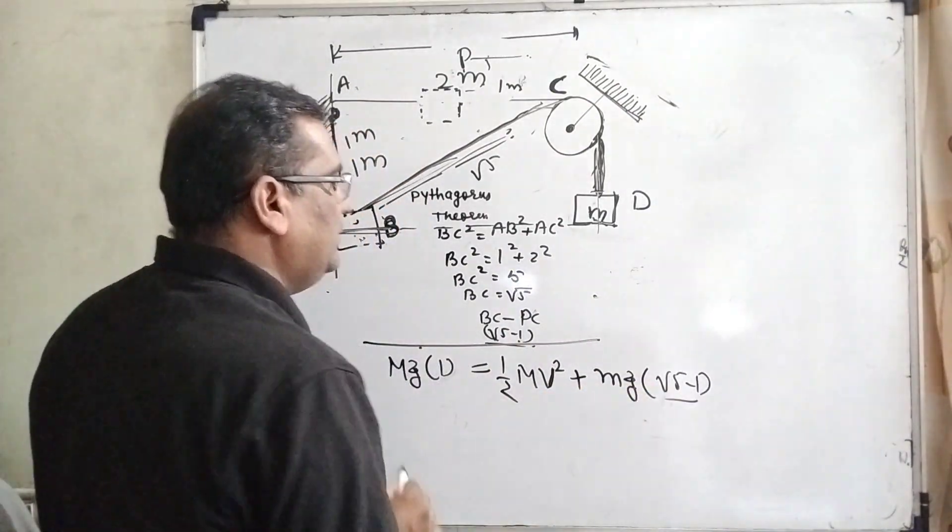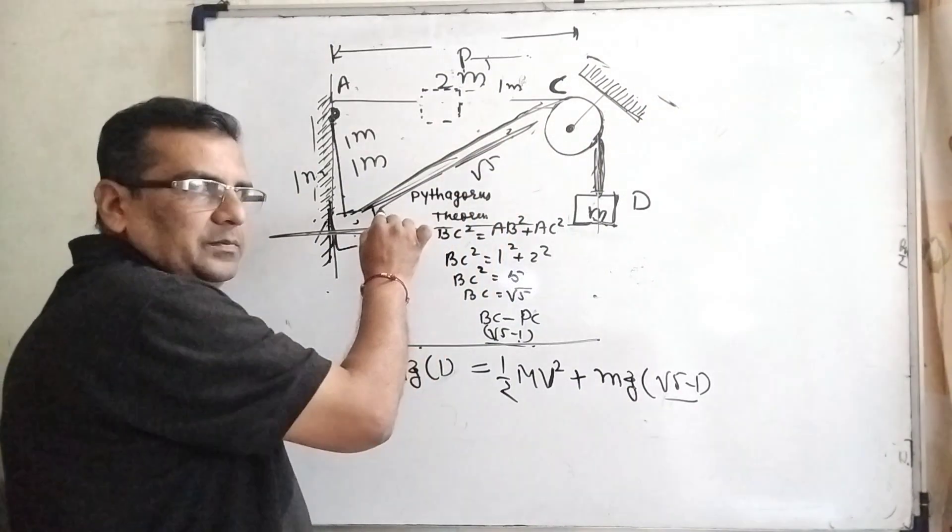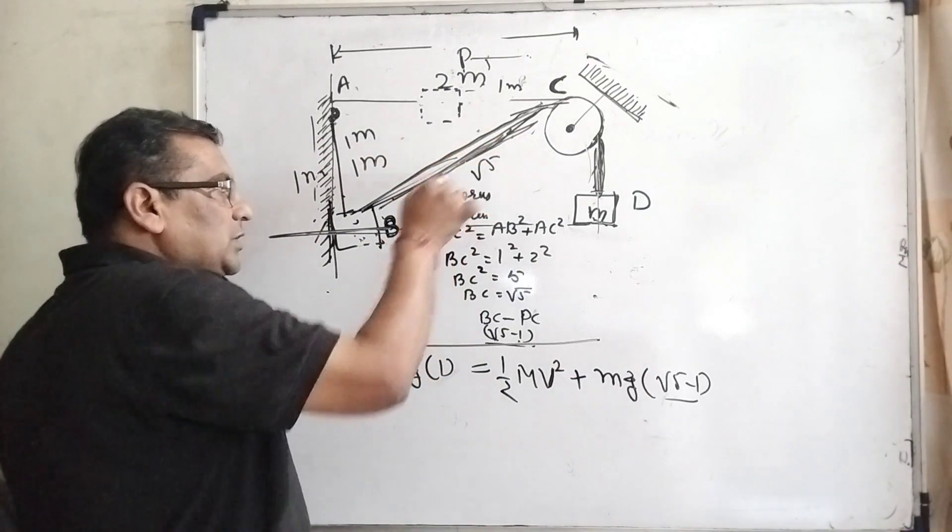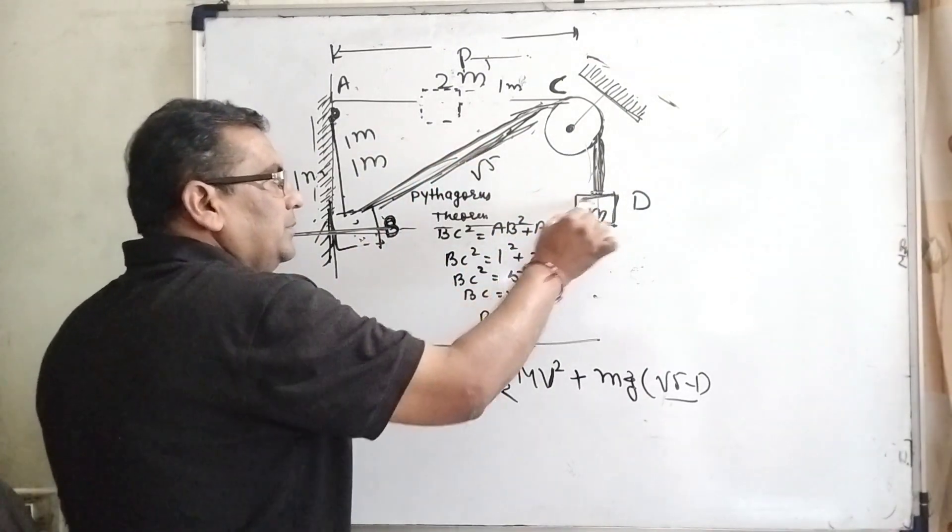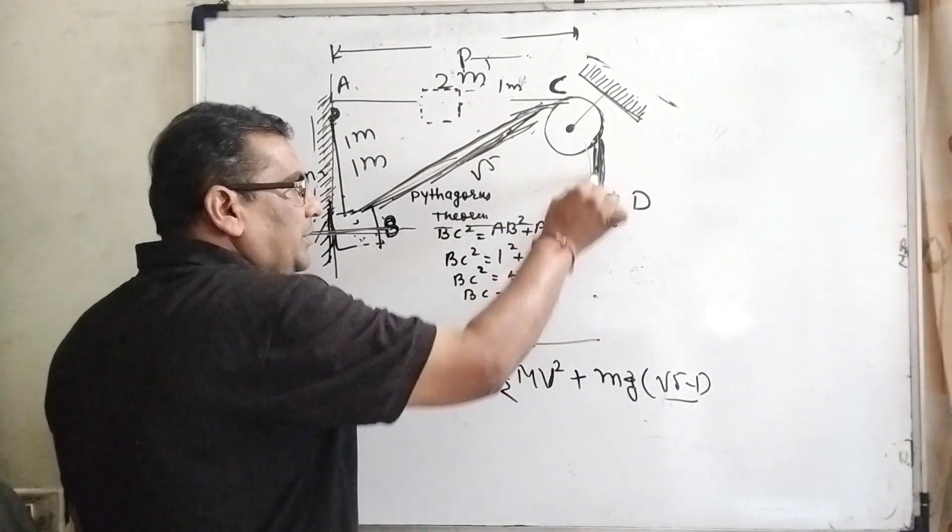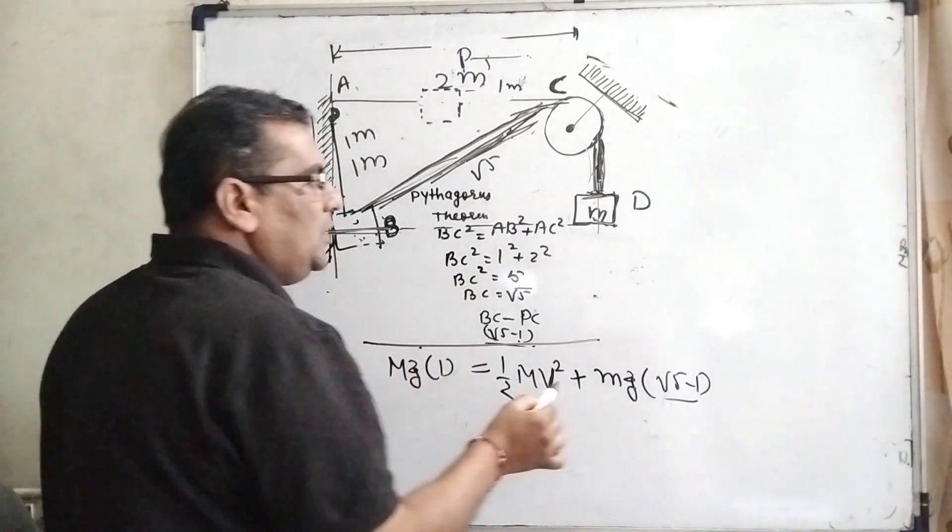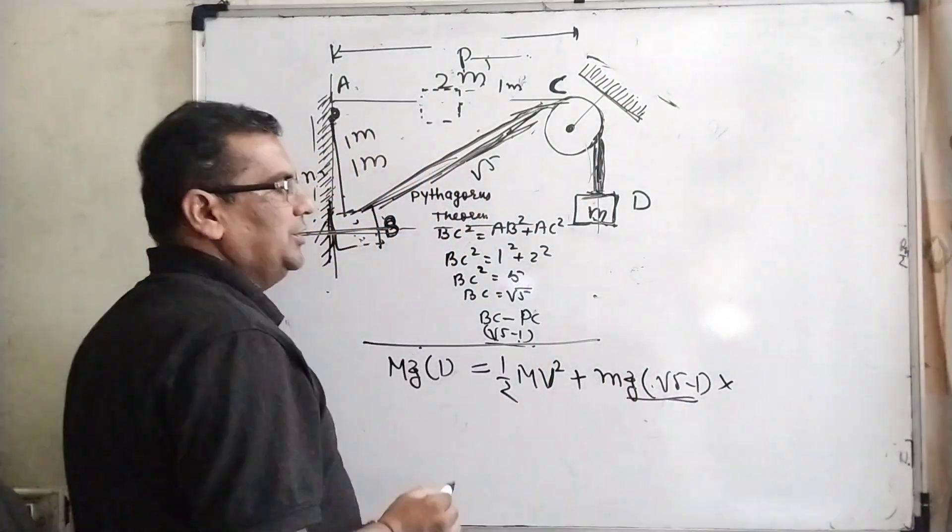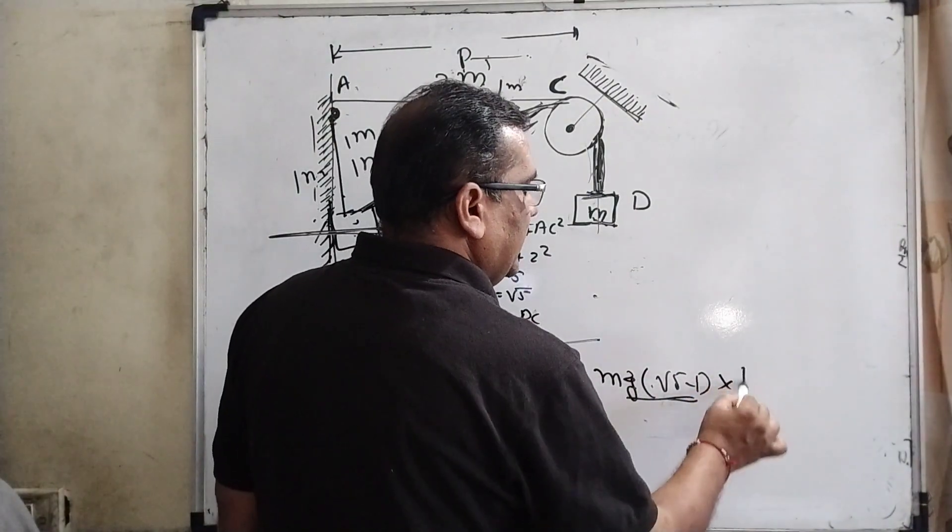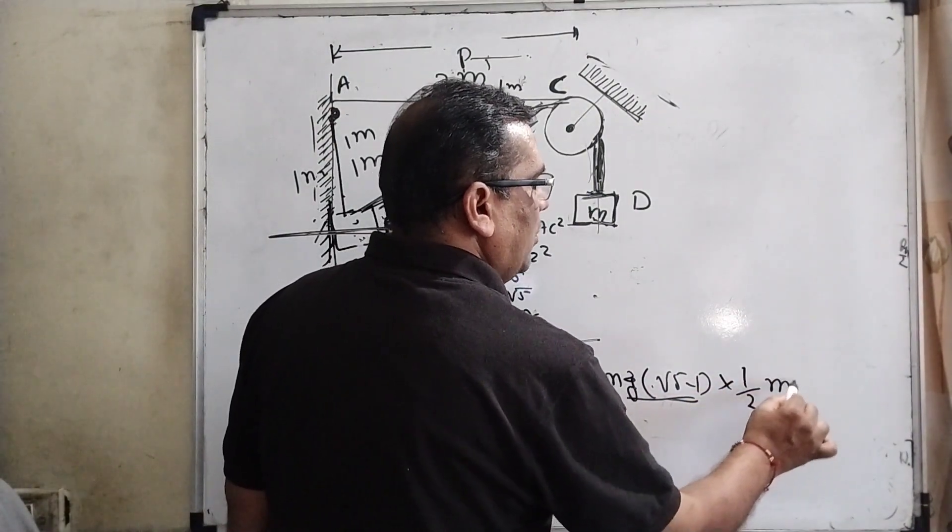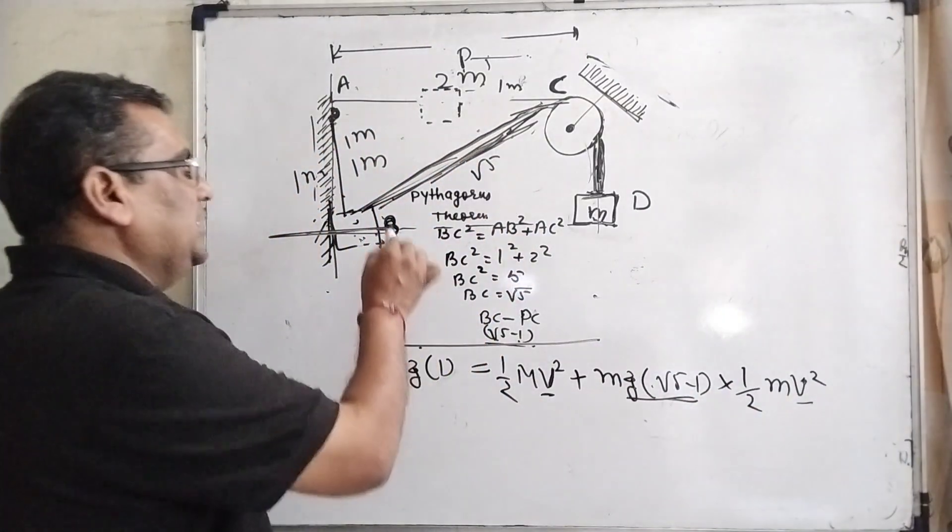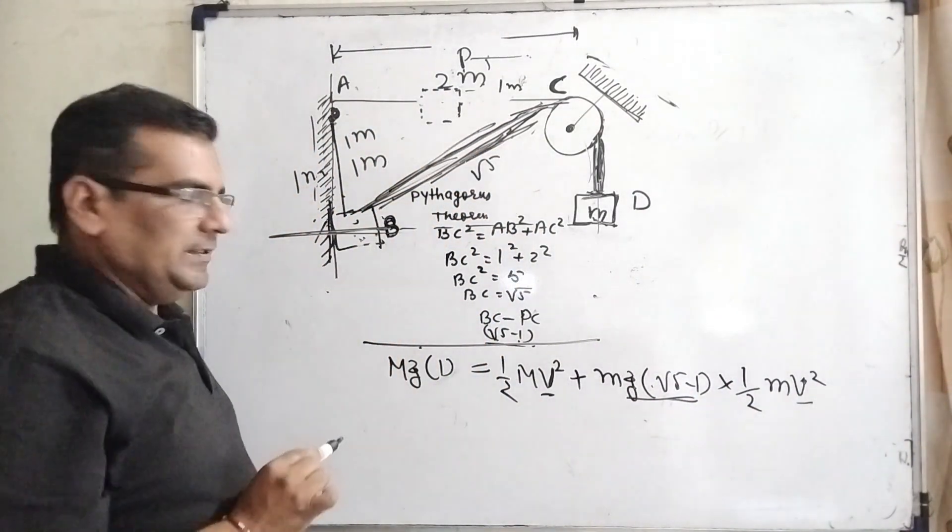Here it's potential energy mg, and what is the rising up to the height? Its height is root 5 minus 1. Why root 5 minus 1? Because root 5 is this distance and because this rope is loosened, it means the length of this rope decreases, so now root 5 minus 1 is its potential energy.